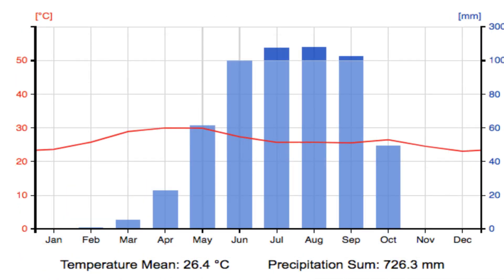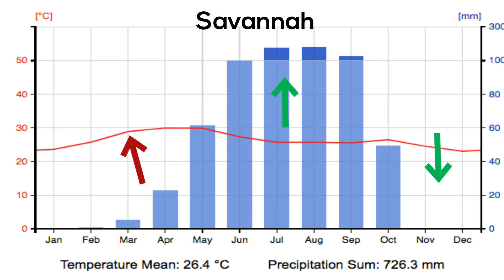This next graph is a savannah, and you can notice that the temperatures are steady between warm and hot, and that they have a rainy and dry season.